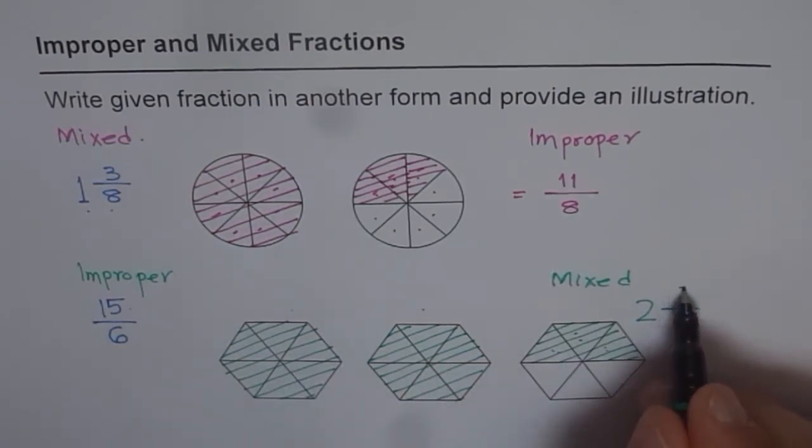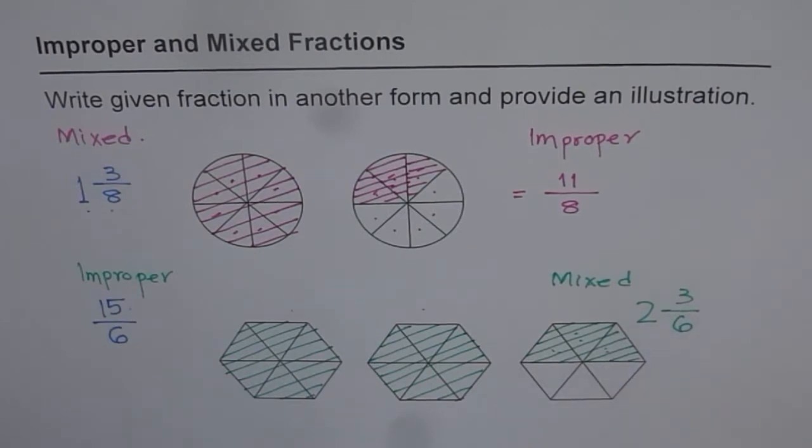And how many left after 2 wholes? 1, 2, 3 sixths. 3 out of 6. Do you see that? That is how you write fractions in different form. That is how you illustrate them in a figure.